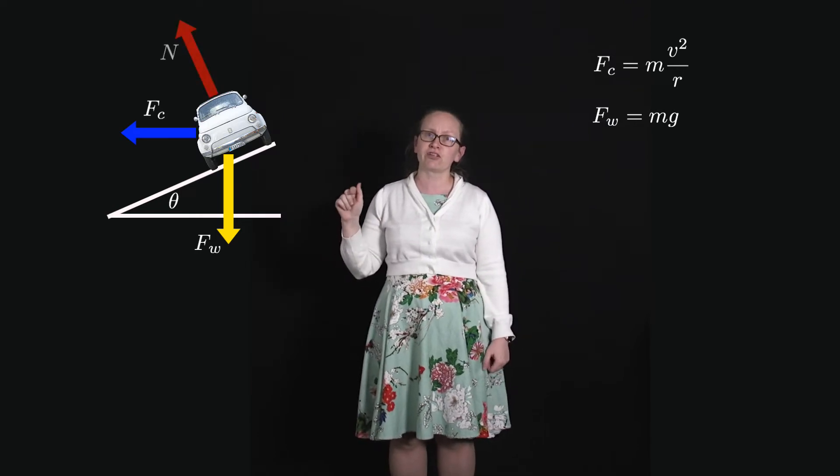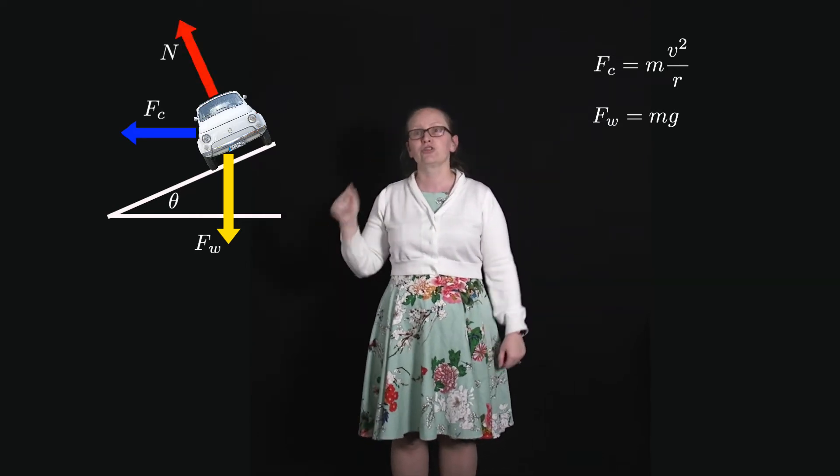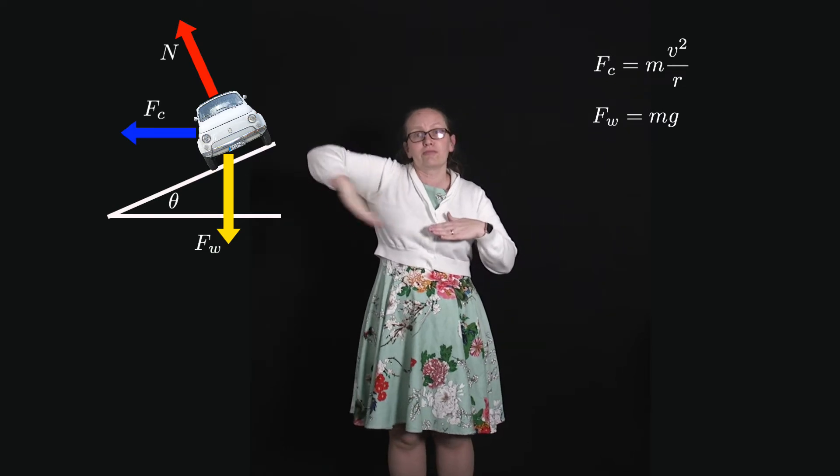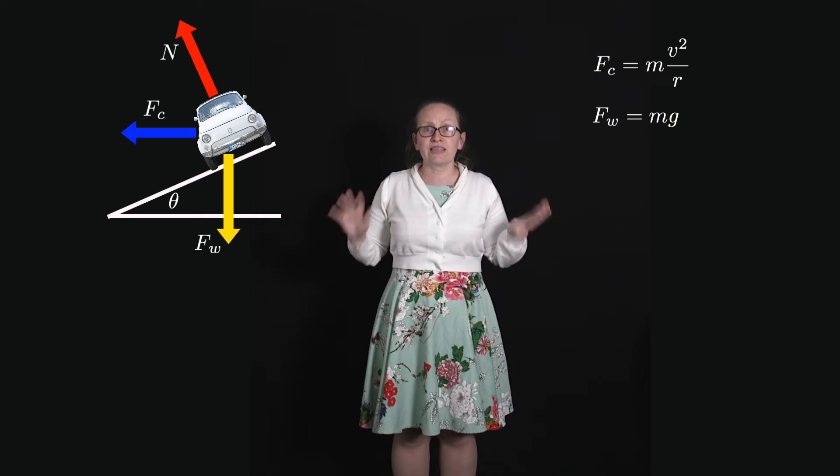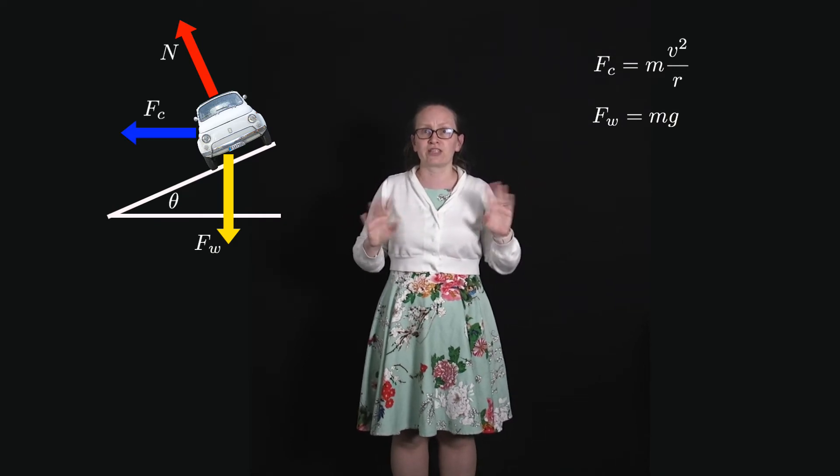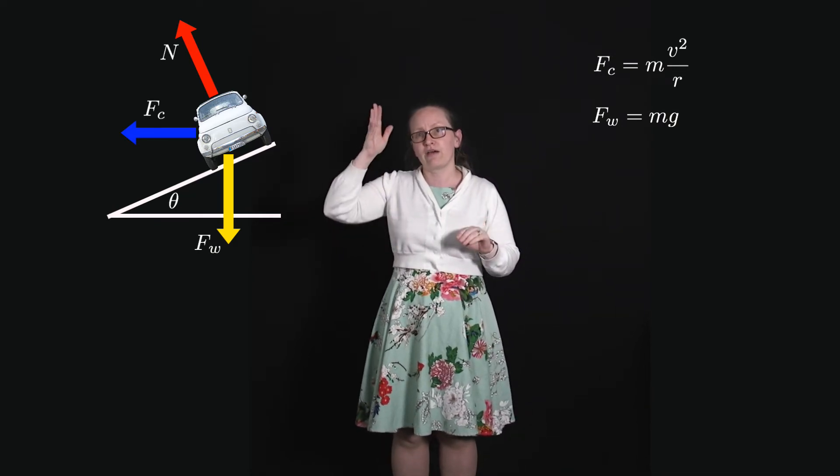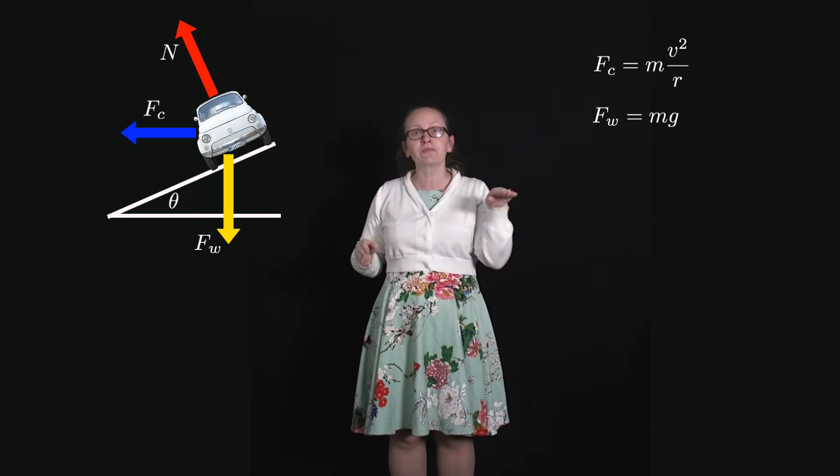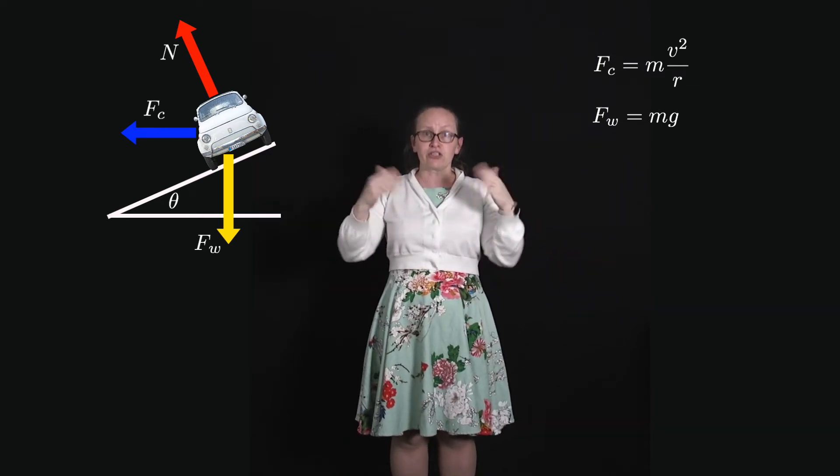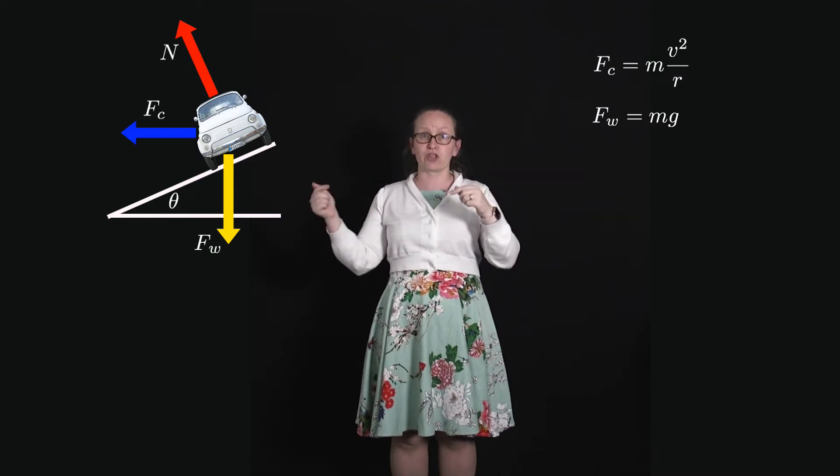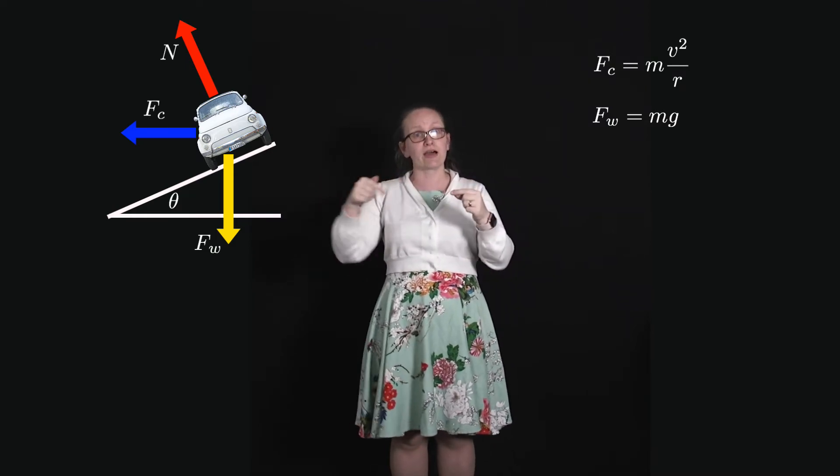We've got the normal reaction force which is perpendicular to the slope, the inclined plane or the banking in this case. What we're going to do is break our forces into components which are vertical and horizontal. The reason we're choosing this is that our resultant acceleration is horizontally towards the center because the car is traversing a circle, and so the net force is in the horizontal direction towards the center.